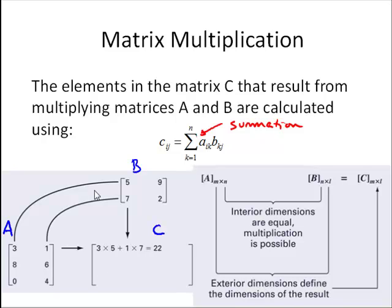So the second element here would be 8 times 5 plus 6 times 7, or 40 plus 42. So this would be 82. And the third element would be 0 times 5 plus 4 times 7, or 28. So that's how we would calculate those first three elements.